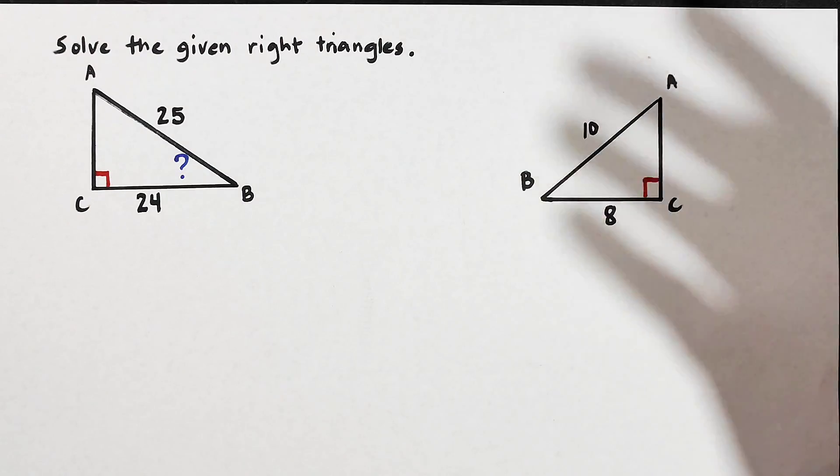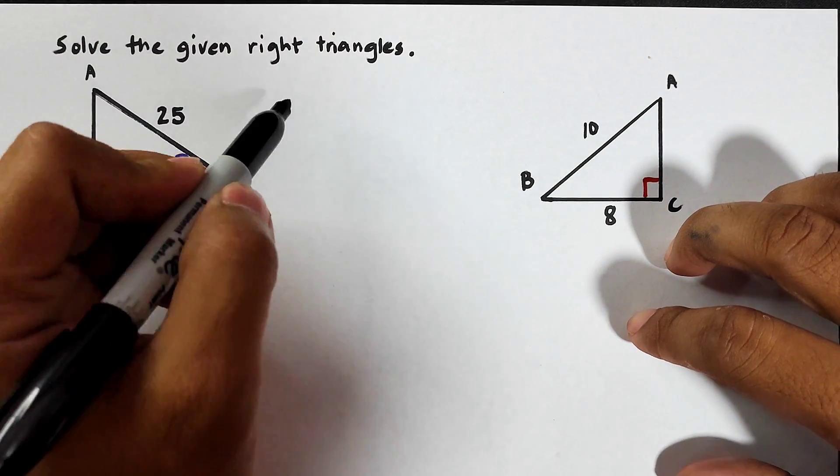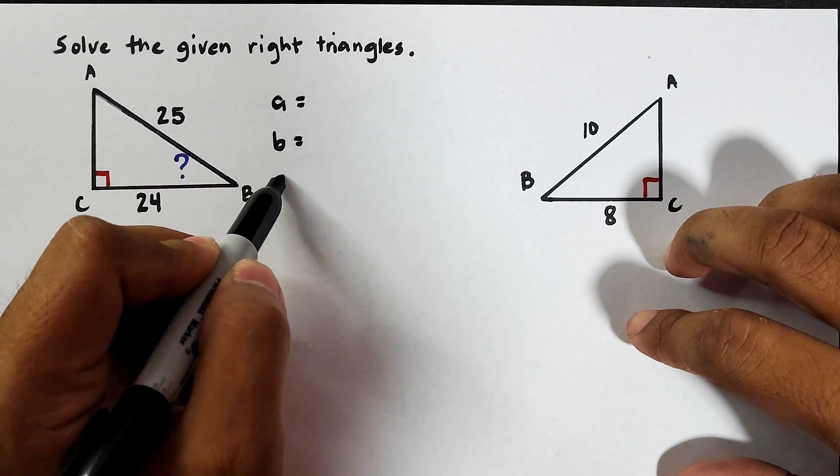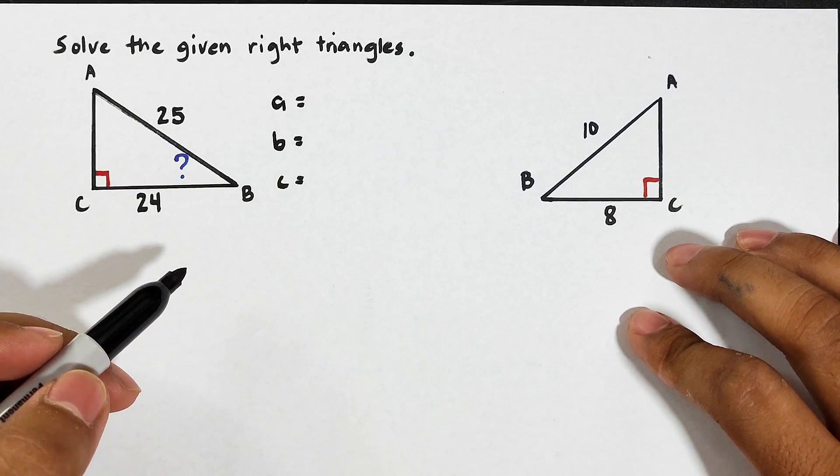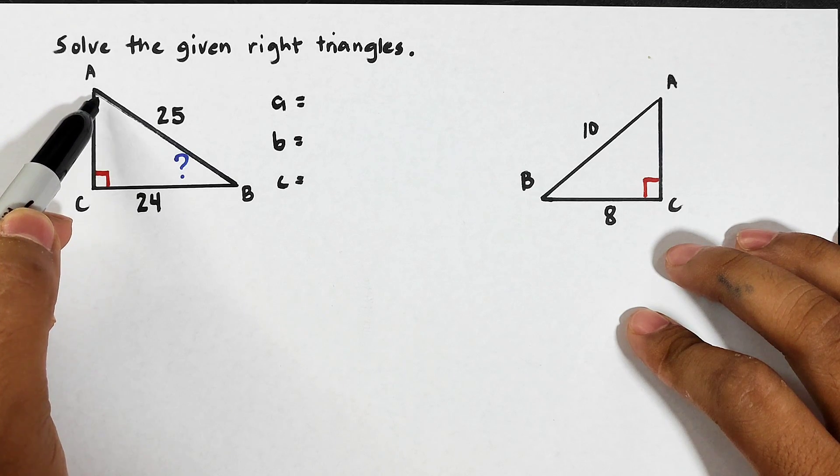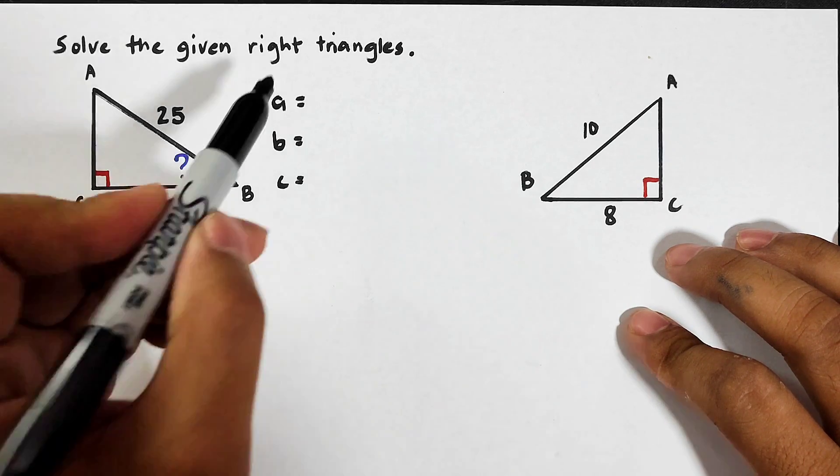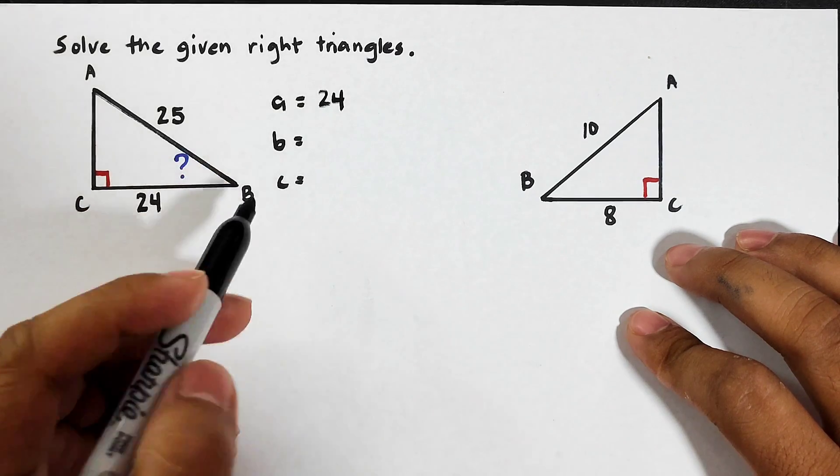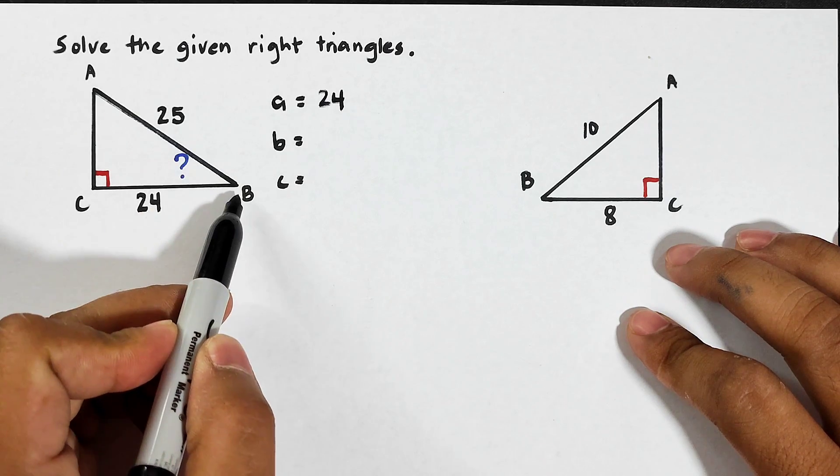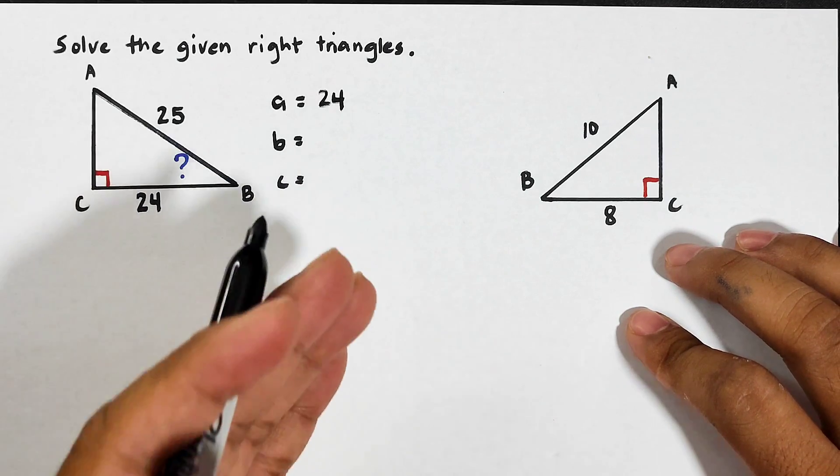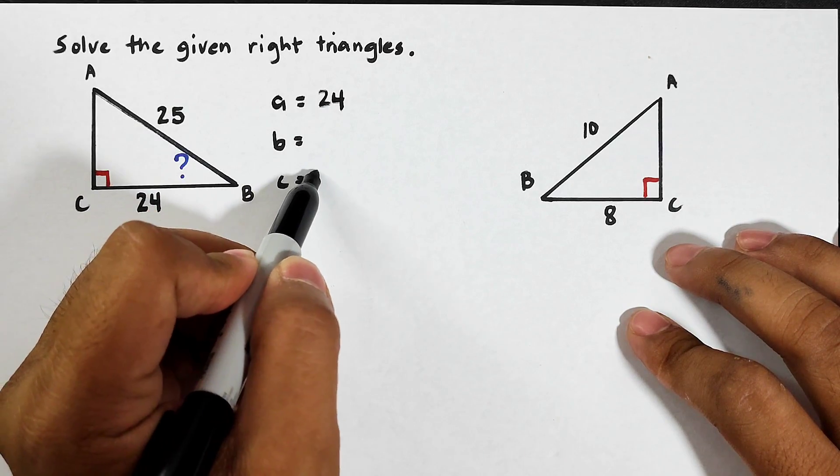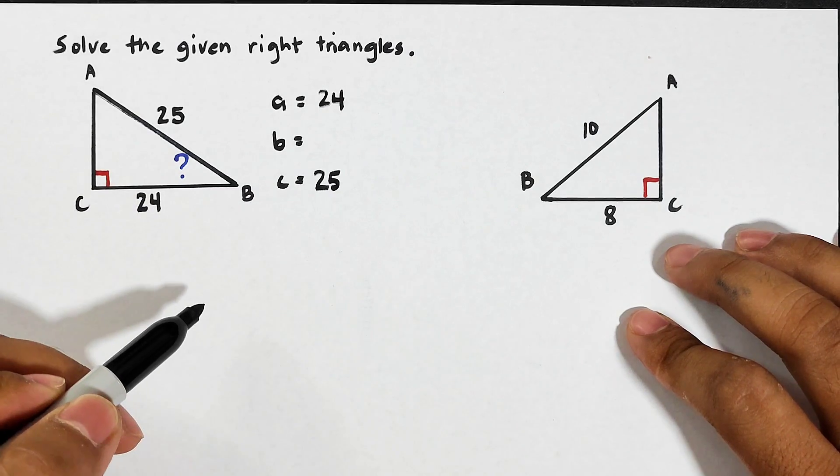So let's start with the sides that we have. For the sides we have side a, side b, and side c. Where's the location of side a? Side a is opposite to your angle A. This is your side a which is 24. For side b, side b is opposite to your angle B, so we will leave it as blank. For side c, definitely that is your hypotenuse.